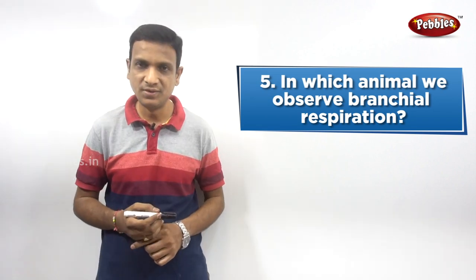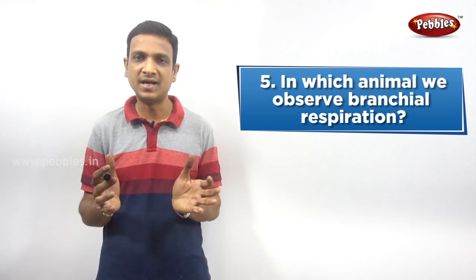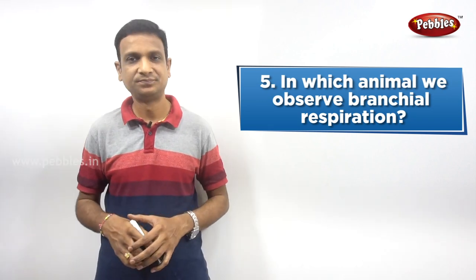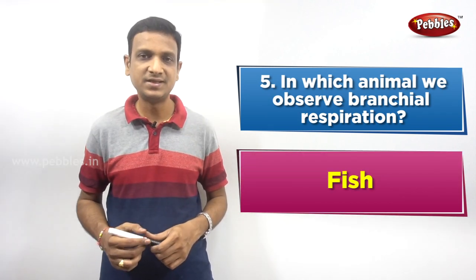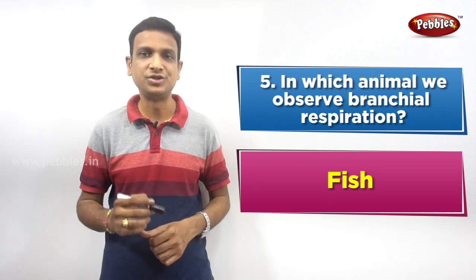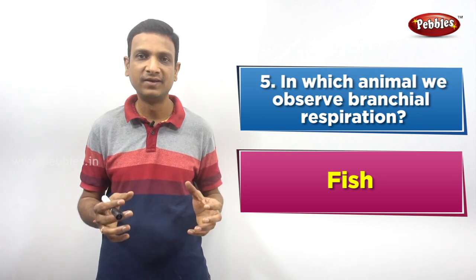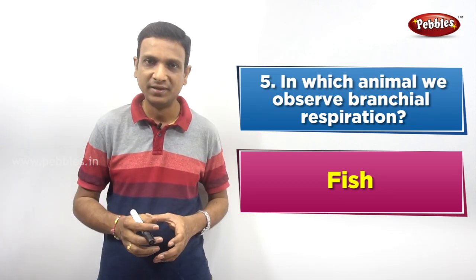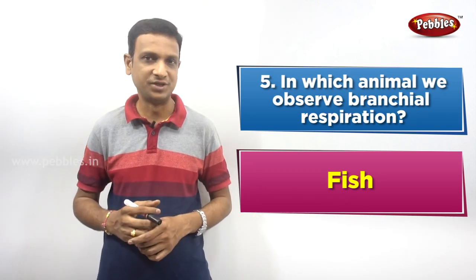Fifth question: in which animal do we observe branchial respiration? The answer is fish. Fish have gills for breathing, and the respiration done with the help of gills is called branchial respiration.